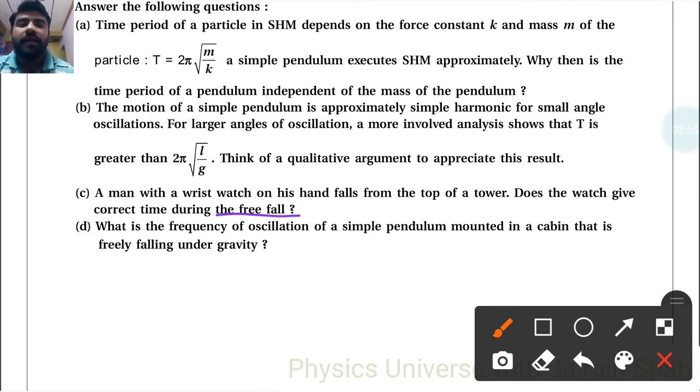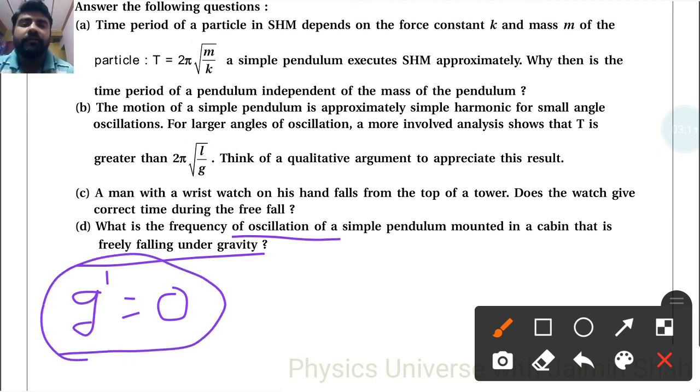Next, what is the frequency of oscillation of a simple pendulum mounted in a cabin that is freely falling under gravity? Our effective gravity will be zero. Because of gravity, oscillations happen, but if it is falling, then we know that falling gravity is zero, no oscillations. So there is no frequency.